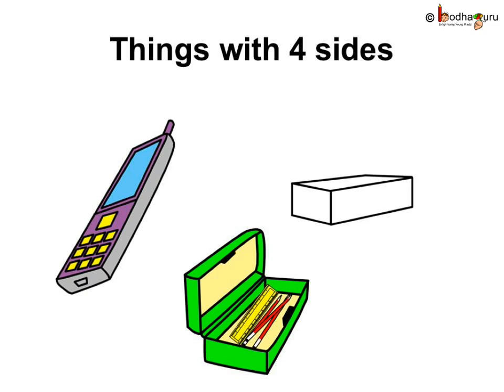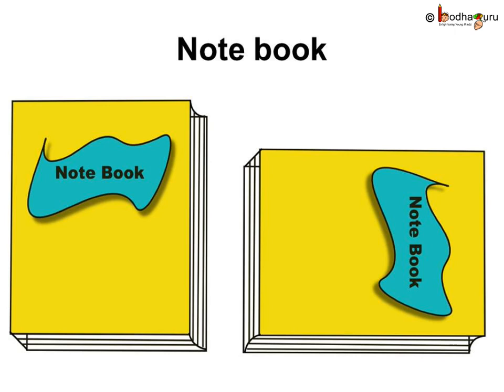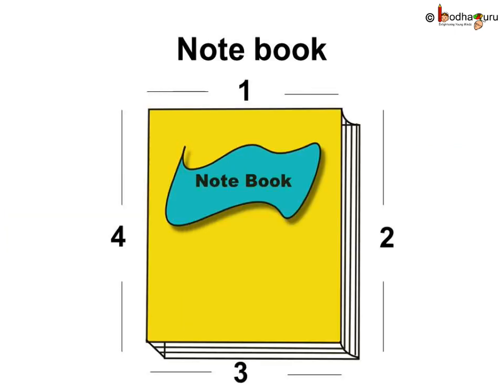Look at the mobile phone or eraser or your pencil box. They all have four sides. But, are the four sides equal? Now look at your notebook. Turn it to one side then again turn it. Is it a square? No.